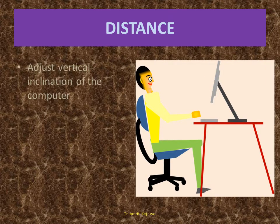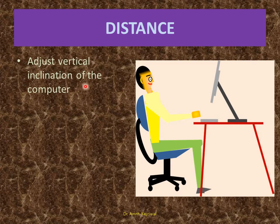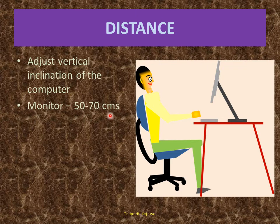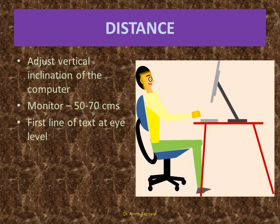Distance: The vertical inclination of the computer has to be arranged and adjusted. You can see here the vertical inclination. The monitor should be 50 to 70 centimeters from the eye, and the first line of text should be at eye level.